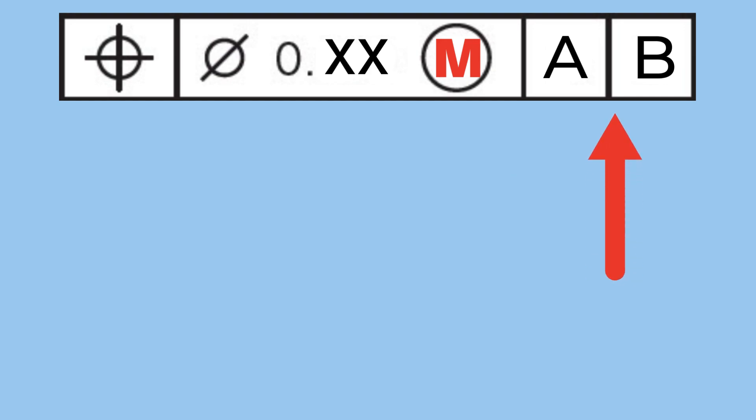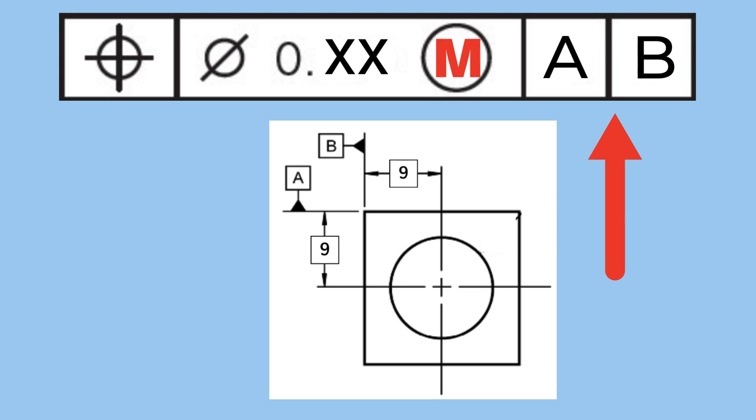Lastly, we have the datums, which indicate the planes or axes from which the true position is measured from.